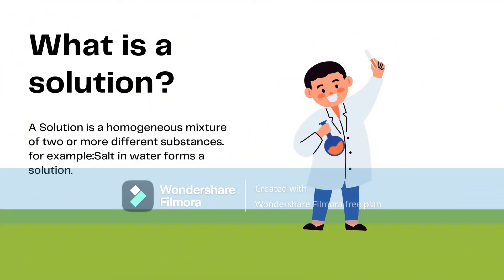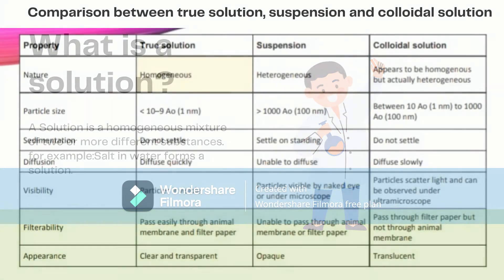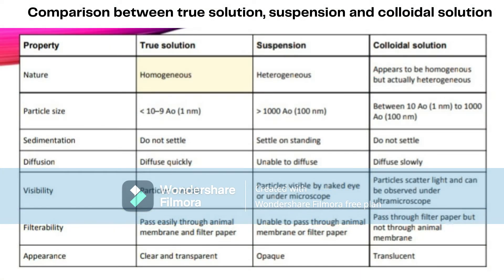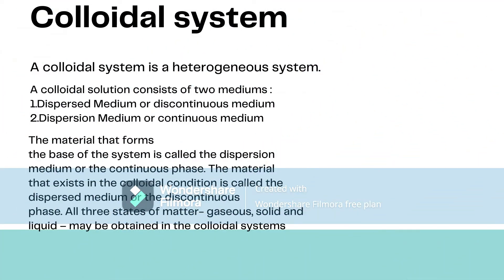Starting with an introduction, let us first talk about solutions and colloidal systems. A solution is a homogeneous mixture of two or more different substances — for example, salt and water form a solution. A colloidal system, on the other hand, is a heterogeneous system. The material that forms the base of the system is called the dispersion medium or continuous phase, and the material that exists in the colloidal condition is called the dispersed phase or discontinuous phase.